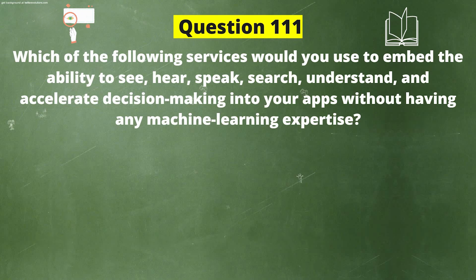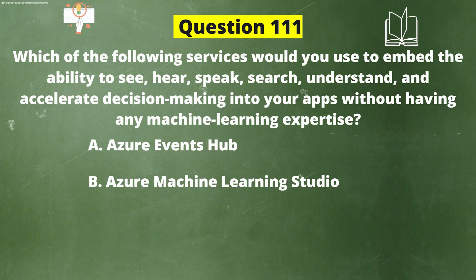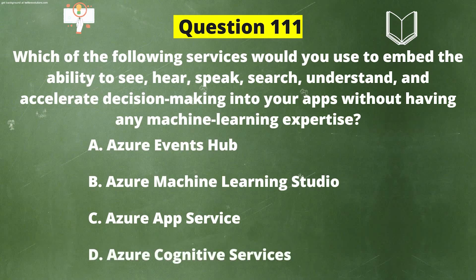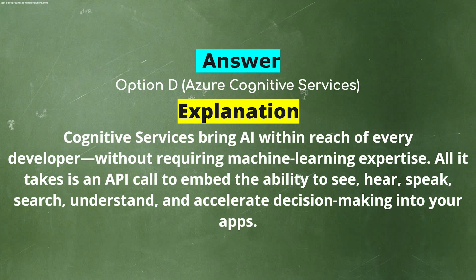Next question. Which of the following services would you use to embed the ability to see, hear, speak, search, understand, and accelerate decision-making into your apps without having any machine learning expertise? Option A: Azure Events Hub. Option B: Azure Machine Learning Studio. Option C: Azure App Service. Option D: Azure Cognitive Services. The correct answer is Option D, Azure Cognitive Services. Cognitive Services bring AI within reach of every developer without requiring machine learning expertise. All it takes is an API call to embed the ability to see, hear, speak, search, understand, and accelerate decision-making into your apps.